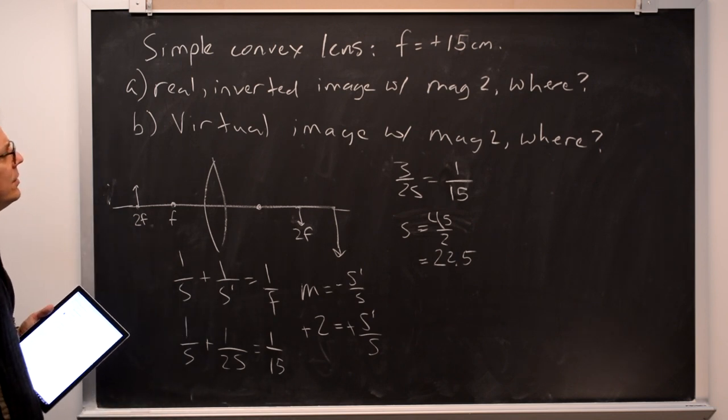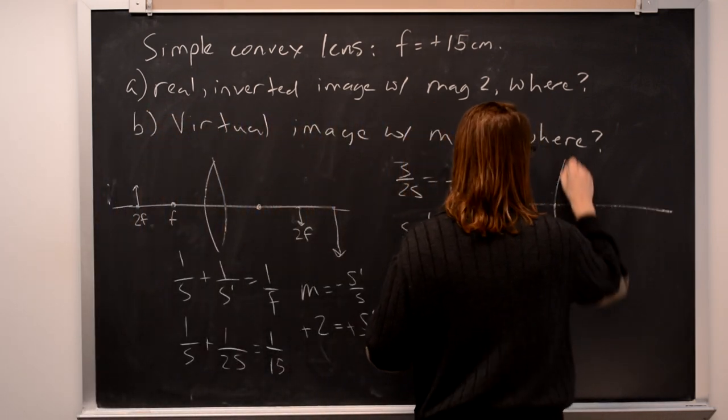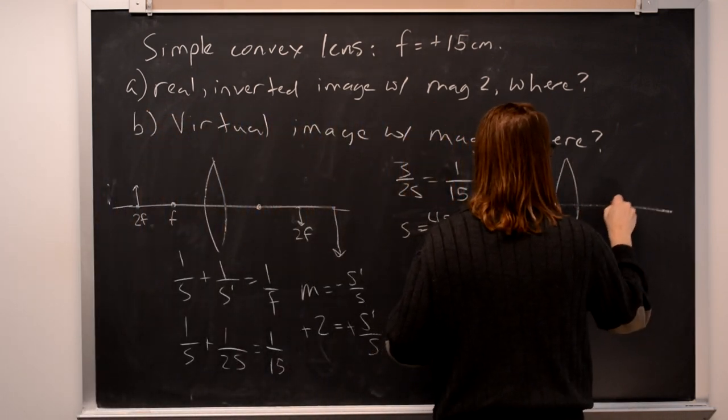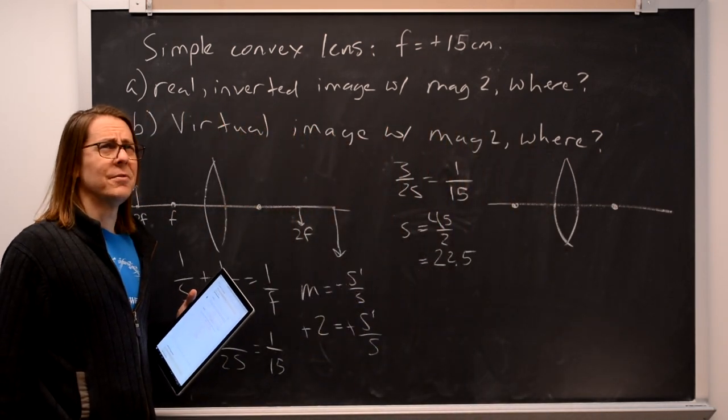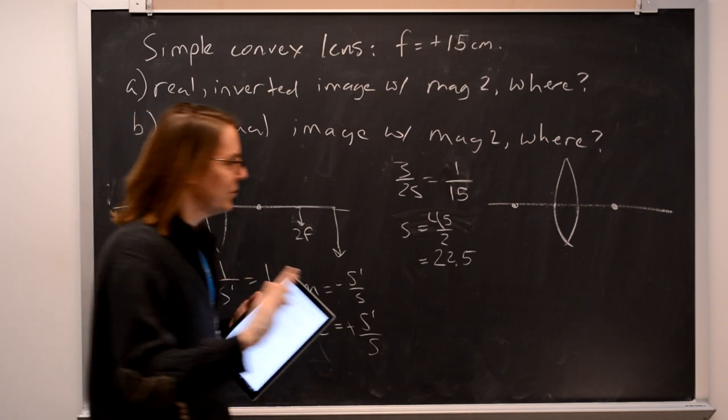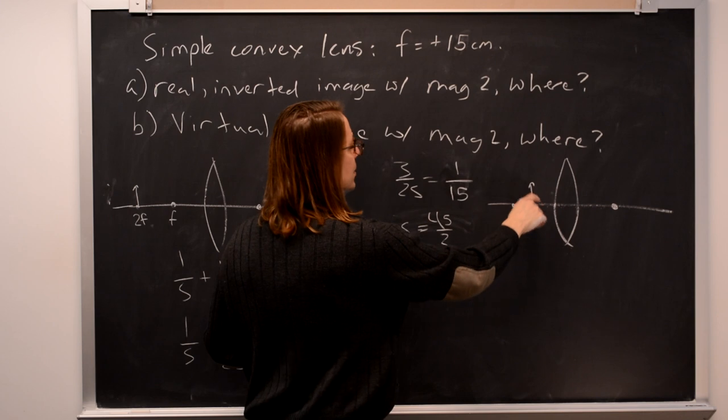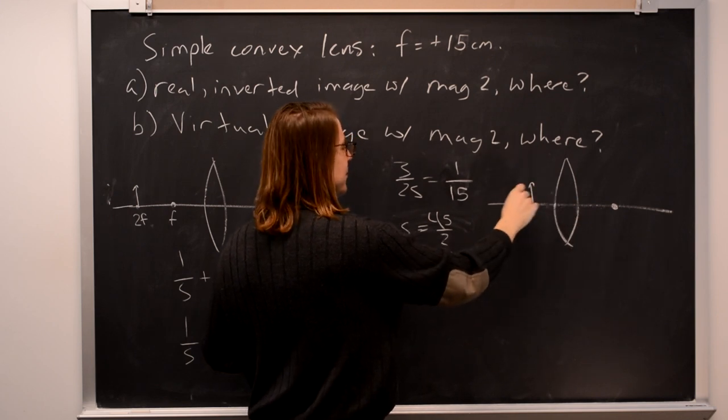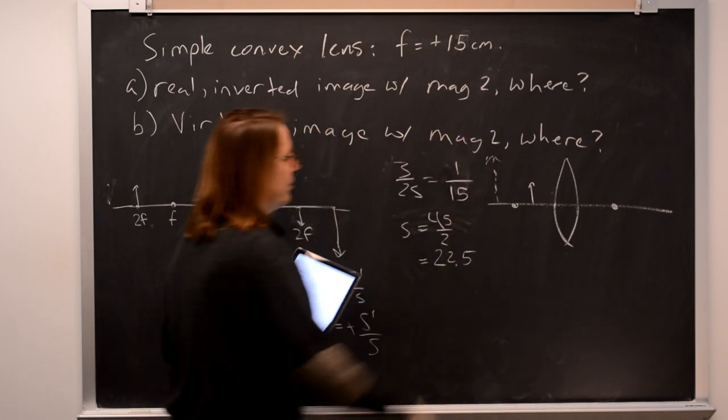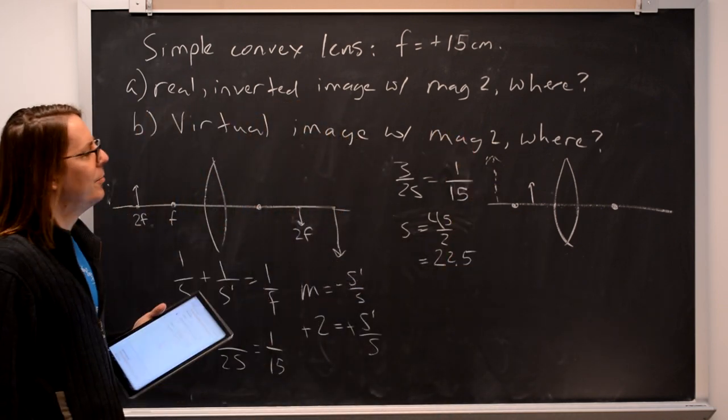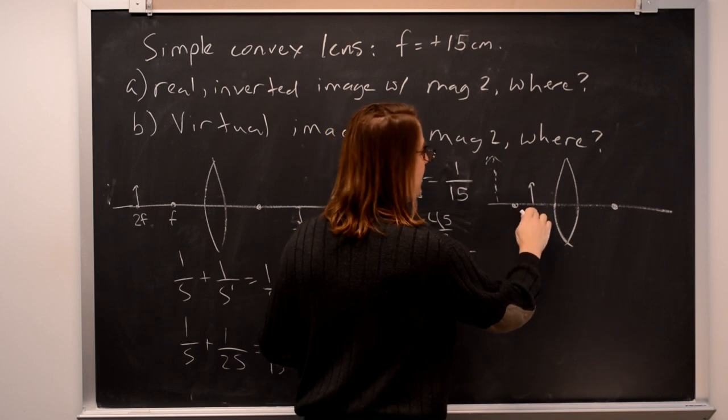Part b, virtual image with magnification 2, where does it go? Well, I'd probably start by saying where is it that I put an object for a virtual image? Inside the focus. It must be in here somewhere. You put it in there somewhere and the image will be a virtual image. It will be upright, it will be behind somewhere, something like that. That's all we need to know. So when we get our answer for where the object goes, it should be inside that.